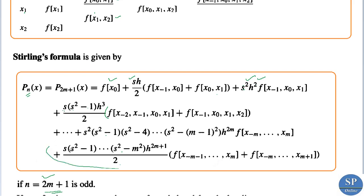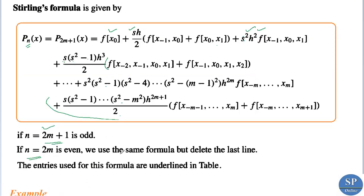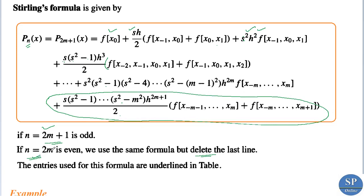The last term applies only when n = 2m+1, that is when n is odd. If n is even, that is n = 2m, we use the same formula but delete the last line. If n = 2m we continue up to h^(2m), and if n = 2m+1 we continue up to h^(2m+1), that is h^n. So the terms go: f(x₀), then s·h, then s²·h², then s(s²−1)·h³/2, then s²(s²−1)·h⁴, etc.